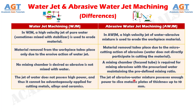Number 4: In water jet machining, the jet of water does not possess high power, and thus it cannot be advantageously applied for cutting metals, alloys, and ceramics. Whereas, in abrasive water jet machining, the jet of abrasive-water mixture possesses enough power to slice metallic plates of thickness up to 10 mm.